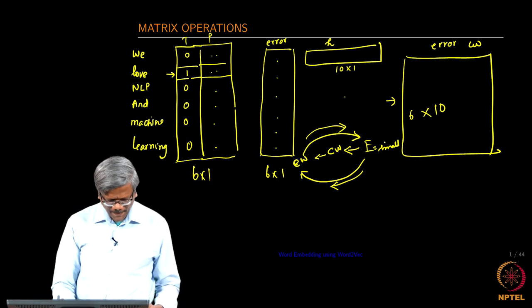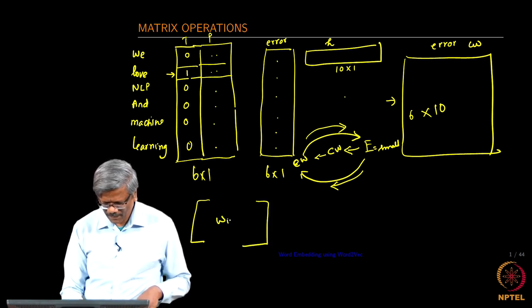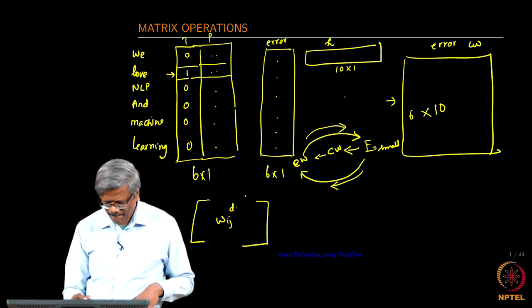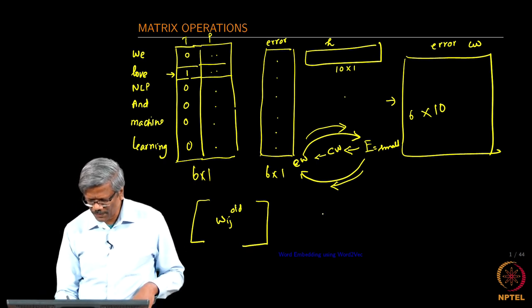In the matrix form how do you really get this? Let me write for the context matrix. This is our old one and now we have the difference. To get the new one, we have w_ij new equal to w_ij old minus the learning parameter and then the difference that you have here, e dot h.